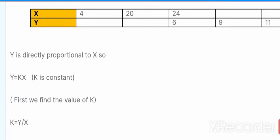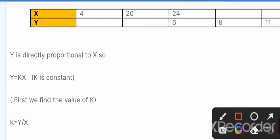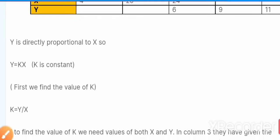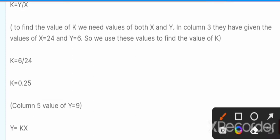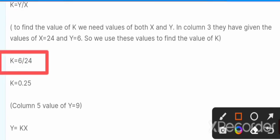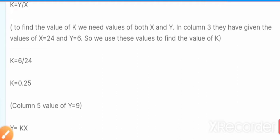By putting the values of y and x from column 4 — y = 6 and x = 24 — we find the value of k. Dividing 6 by 24, we get k = 0.25.